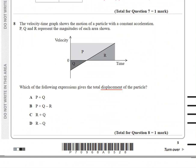The velocity-time graph shows the motion of a particle with a constant acceleration. P, Q, and R represent the magnitudes of each area shown. Which of the following expressions gives the total displacement? If the question said gives the total distance, the answer would have been area above the graph plus area under the graph, but you have to notice the term displacement.